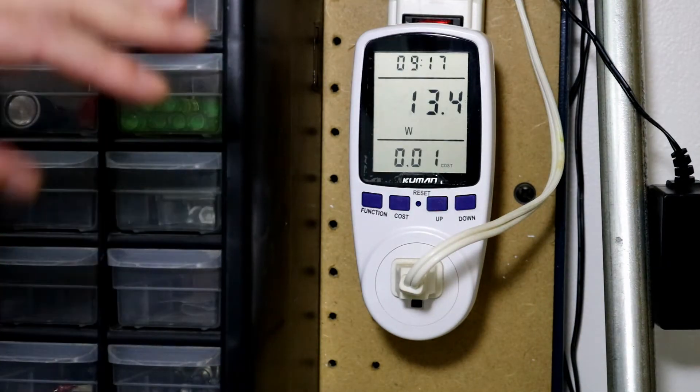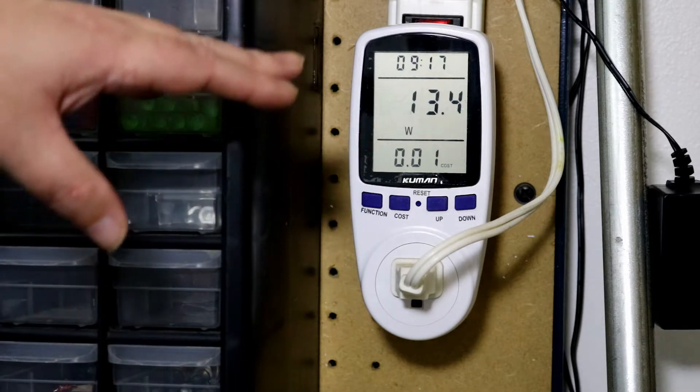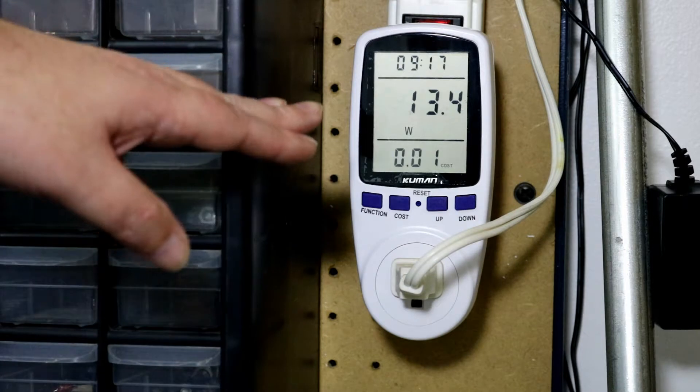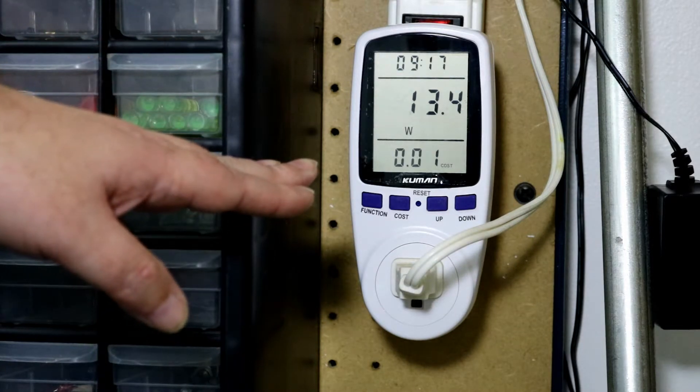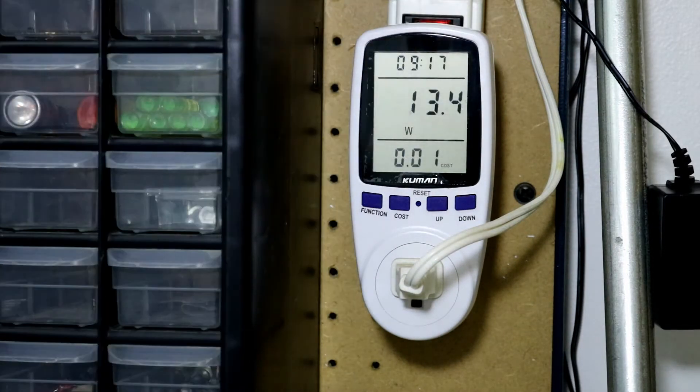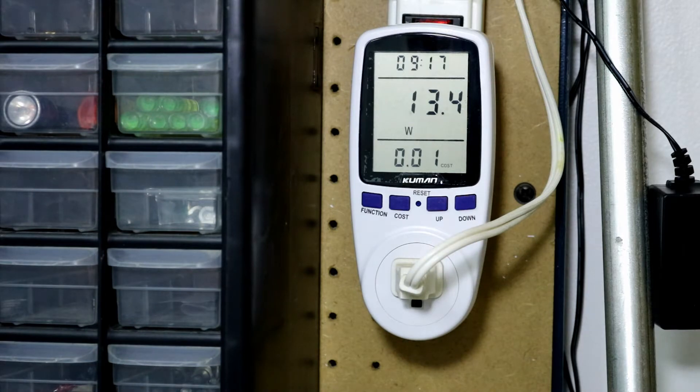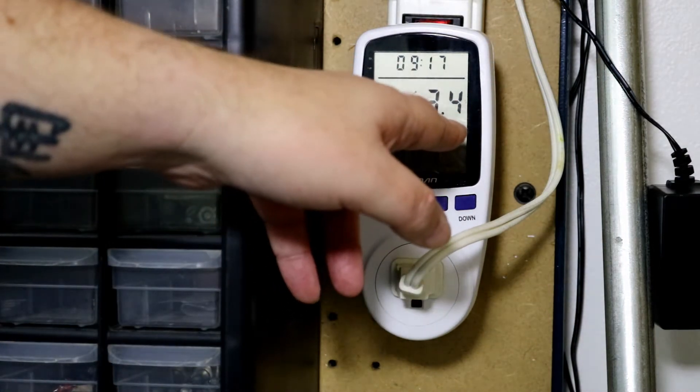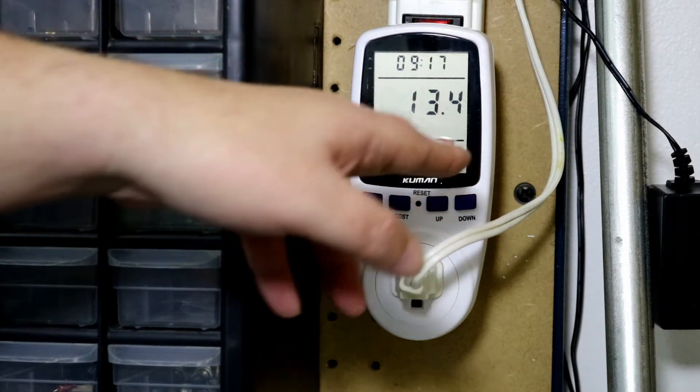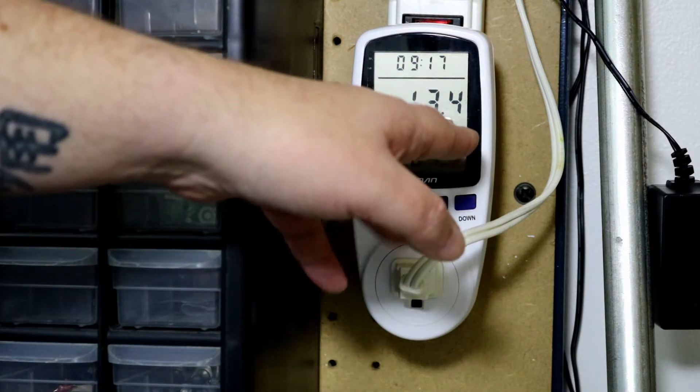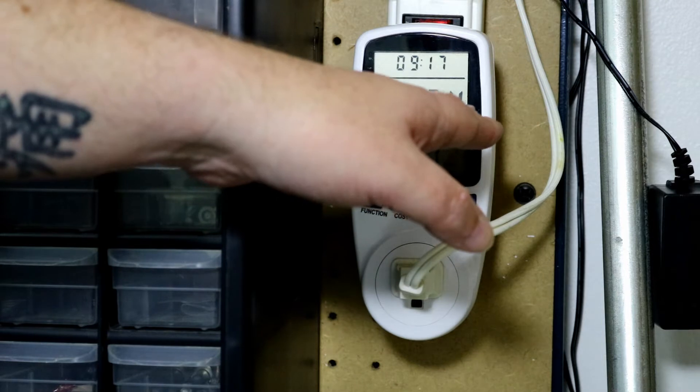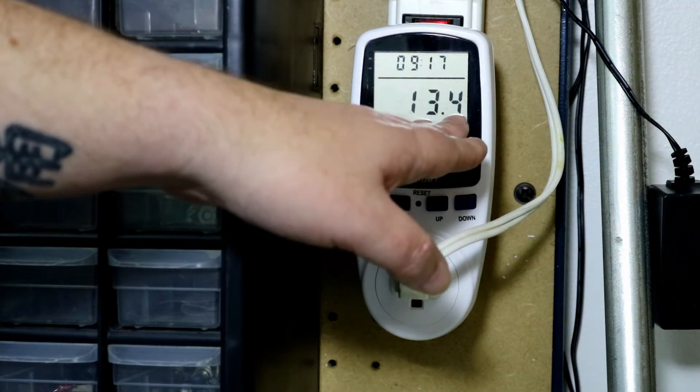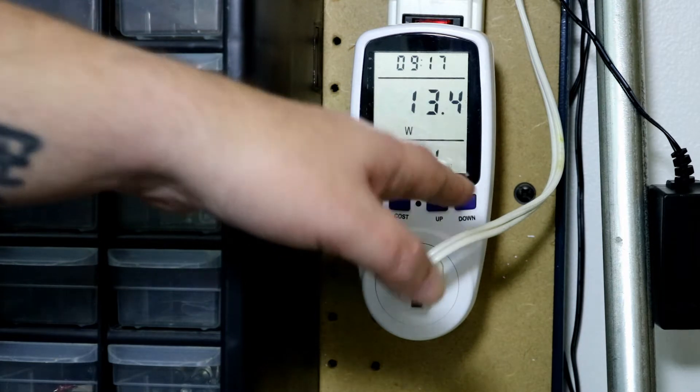So we're at 9 hours and 17 minutes on the clock here. We're using 13.4 watts, and it has cost me 1 cent for that 9 hours. I did have the wattage go up to about 14 and 15, but that's when it was actually cooler in the room. So it seems the warmer the room temperature is, the lower the wattage is being used.